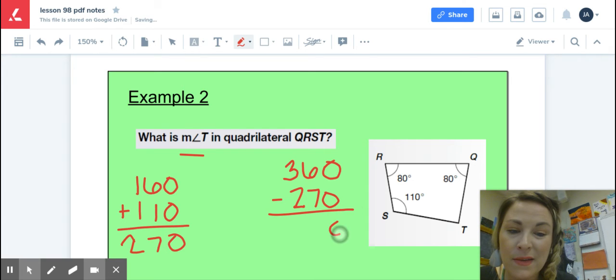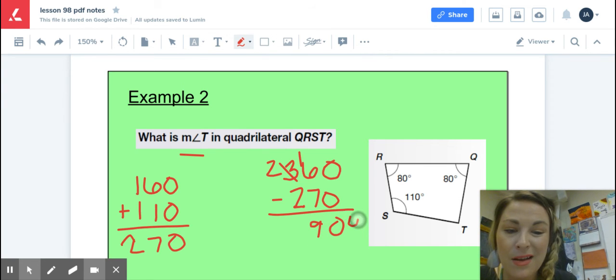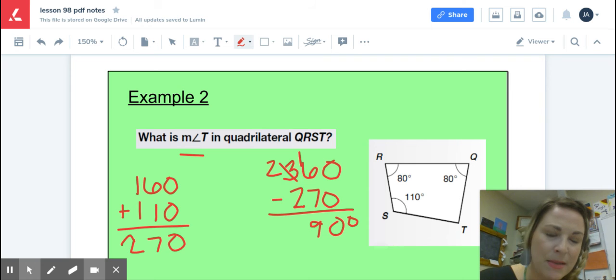We get 0. Regroup. 9. 90 degrees. It's hard to make a small degree sign, but just bear with me.